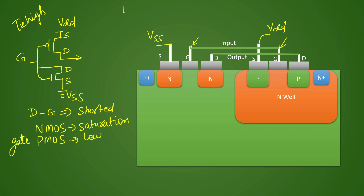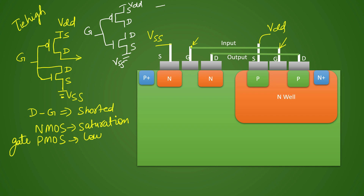Now let us draw one more CMOS circuit to understand the tie low cell. In that, you will have one PMOS and one NMOS. This will be your VSS, this will be your VDD, and you will have a gate terminal with source, drain, and drain, source connections.